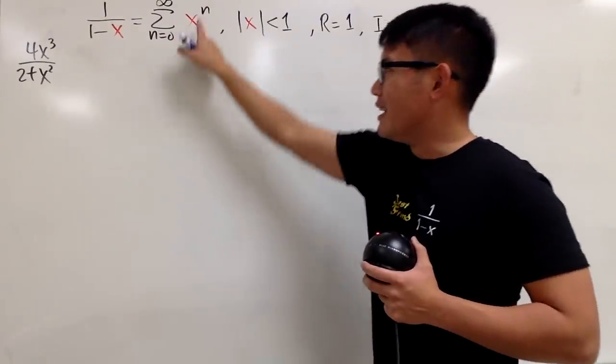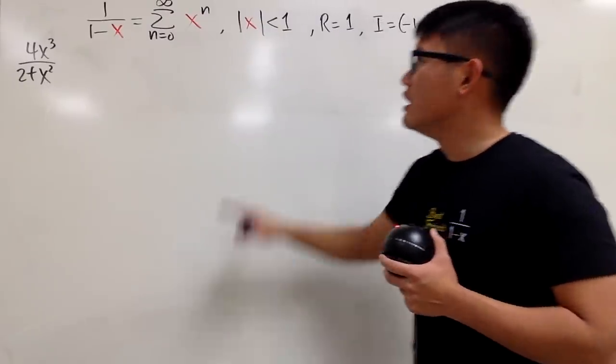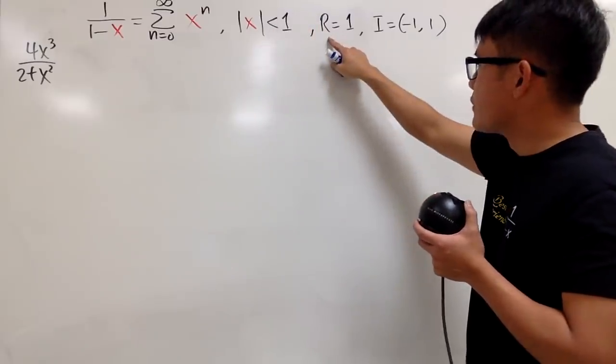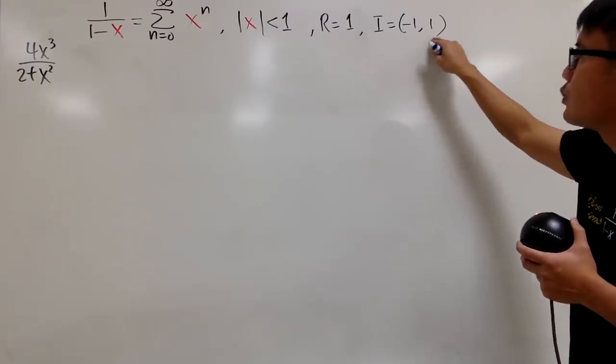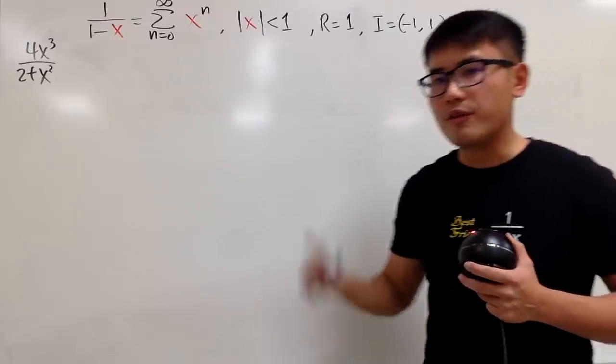But today, we'll just deal with the summation form like this. This only makes sense if the absolute value of x is less than 1. And this tells you the radius of convergence is 1, and the corresponding interval of convergence goes from negative 1 to 1. And you have to remember, we do not include the endpoint for the best friend.